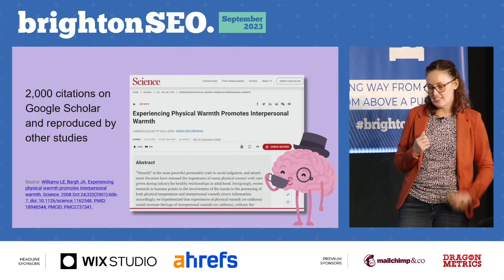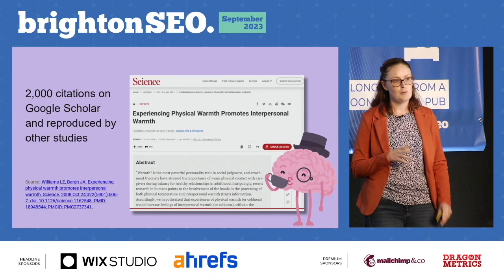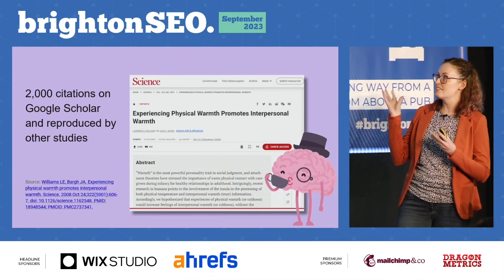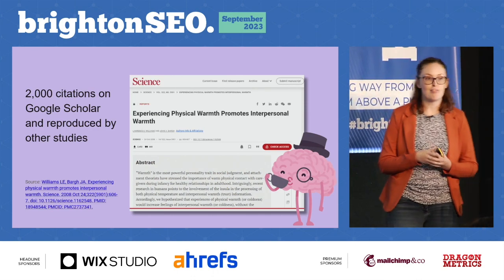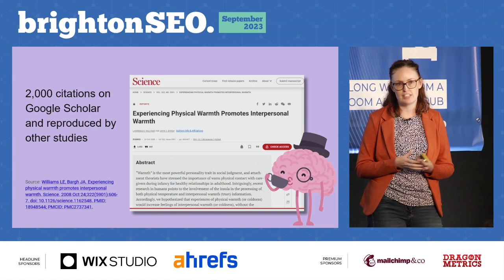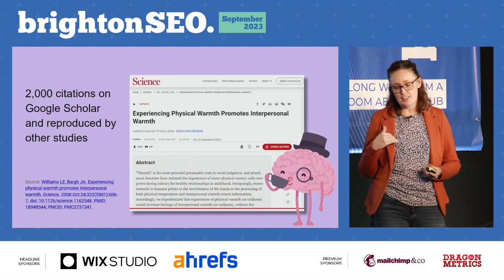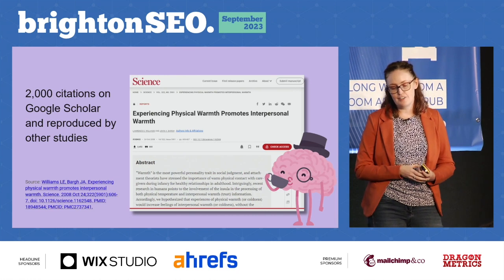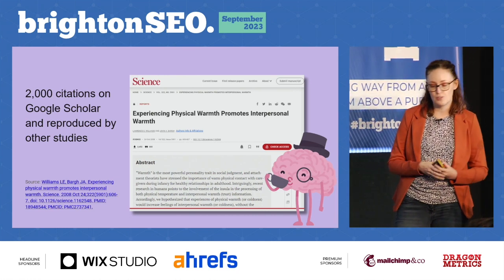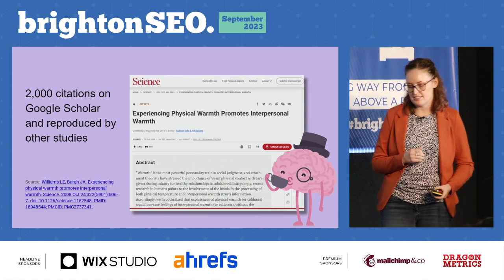This study is so important it was published in the journal Science — the most prestigious journal you can have research published in. It has had over 2,000 citations on Google Scholar and has been reproduced by other studies.